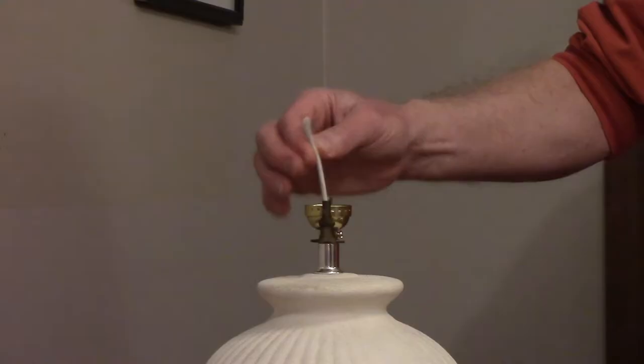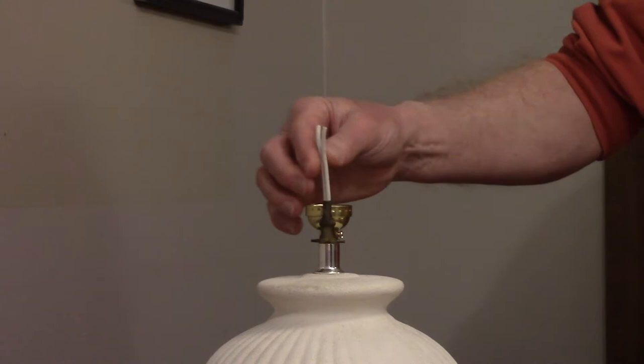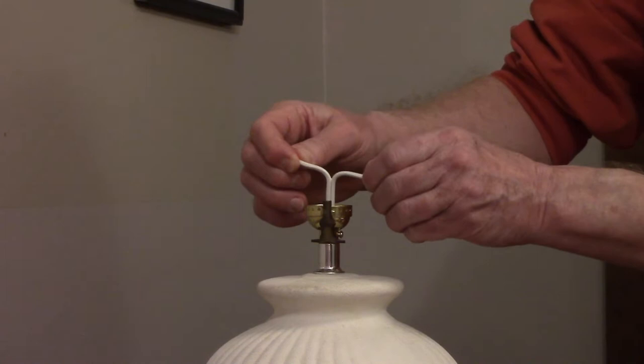Pull the lamp cord up a few inches and you're going to separate the individual wires. Pull them apart and the insulation will separate.